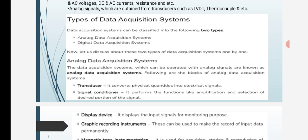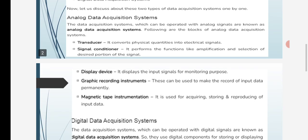Transducer converts physical quantities into electrical signals. Signal conditioner performs functions like amplification and selection of desired portions of a signal. Display device displays the input signals for monitoring purposes.